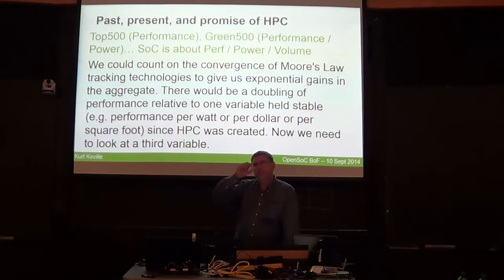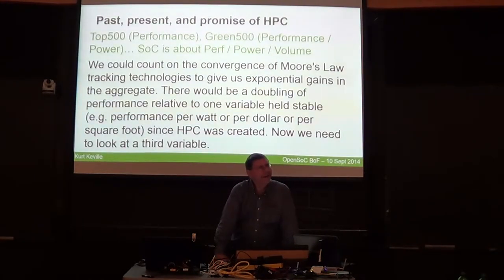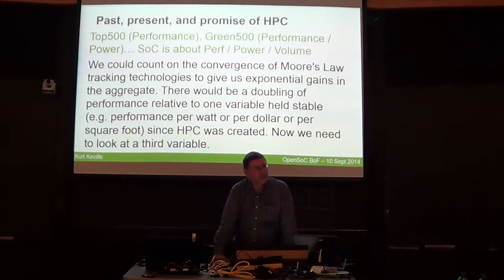One of the Japanese supercomputers — the K supercomputer from Fujitsu — I think they use some sort of Fujitsu proprietary SPARC64 processor. And the best supercomputer now, Tianhe-2, is Chinese and is using Intel processors and Intel co-processors.